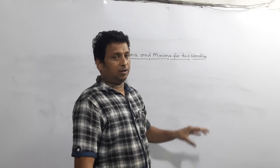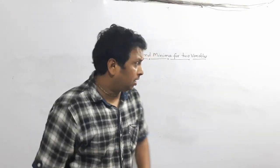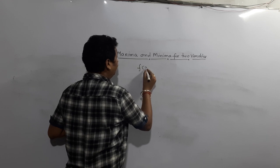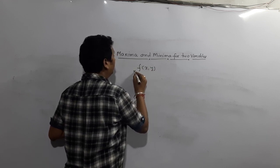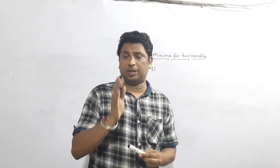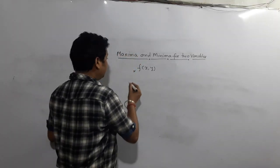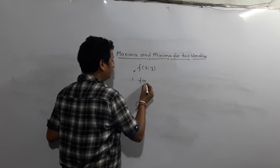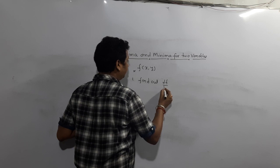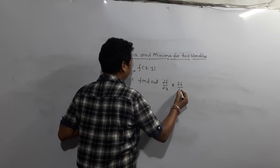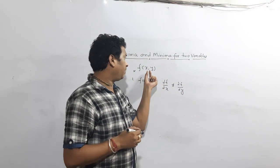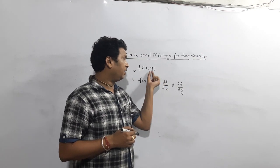Hello friends. In this lecture I will explain maxima and minima for two variables — how we find out maxima and minima for two variables. If you know how to find maxima and minima for one variable, then it is so much easier because the procedure is similar. Always they will give you one function f(x,y). Step number one: find out ∂f/∂x and ∂f/∂y — differentiate partially with respect to x and with respect to y.